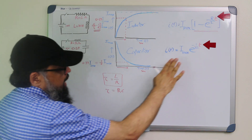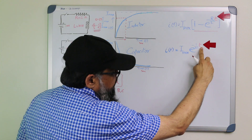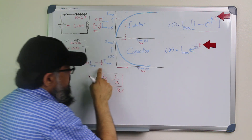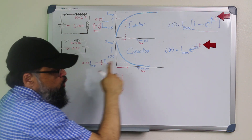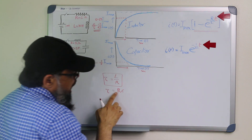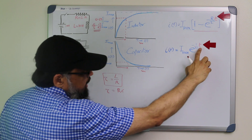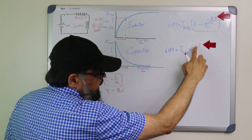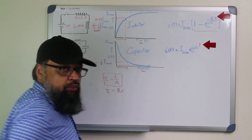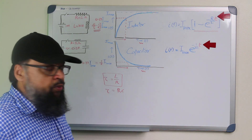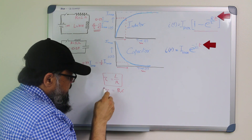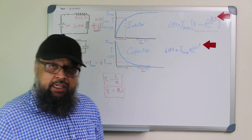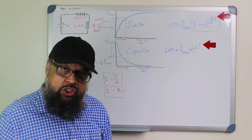Similarly for the RC circuit — what value of T makes this thing equal to 1 divided by e? The value of T should be RC. If you put RC for T here, these two RC terms cancel out and e raised to the power minus 1 remains, which is 1 divided by e. So RC is the time constant of an RC circuit, which has a resistor and a capacitor.